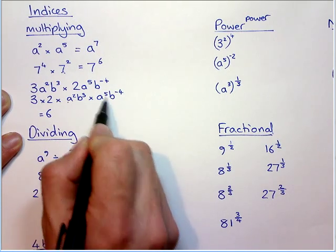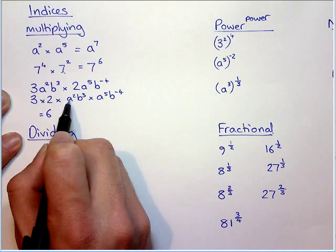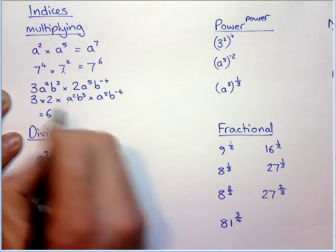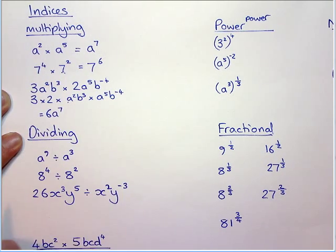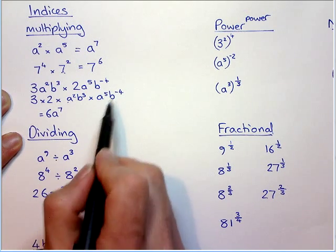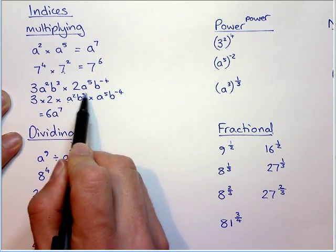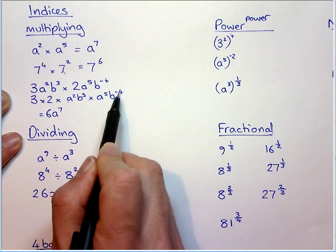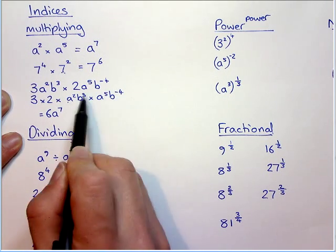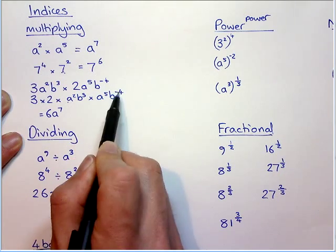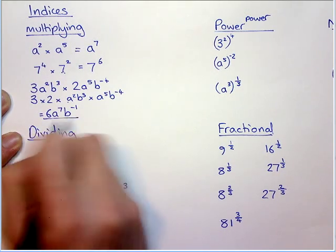Because it's multiplication, we can put things together. I could separate them and put a multiplication sign there. So, a squared times a to the power of 5 is a to the power of 7. Because the bases are the same, we add the powers. But this one's a bit trickier, because we've got b to the power of 3 multiplied by b to the power of minus 4. So we have to add these powers, but 3 add negative 4 is, in fact, negative 1.